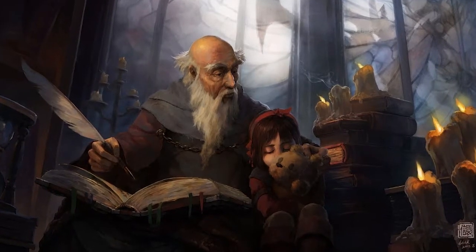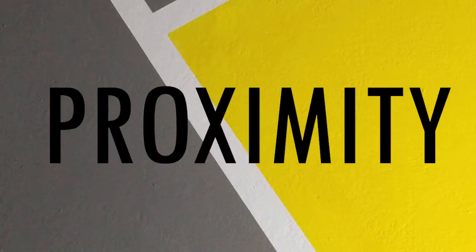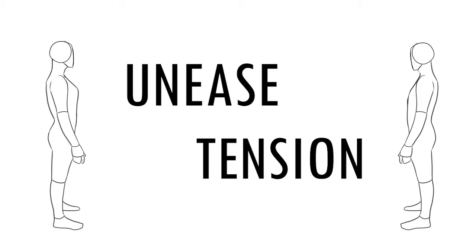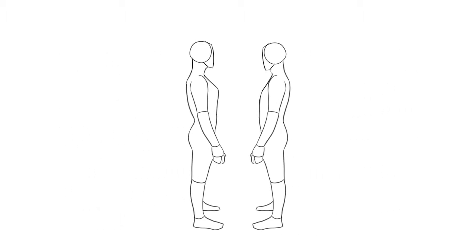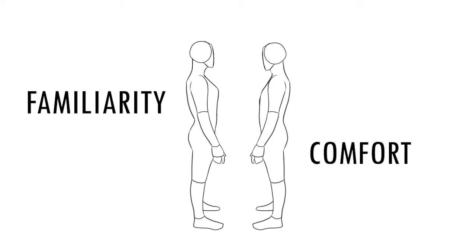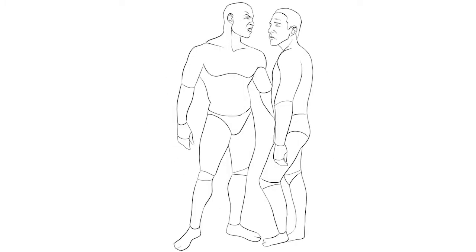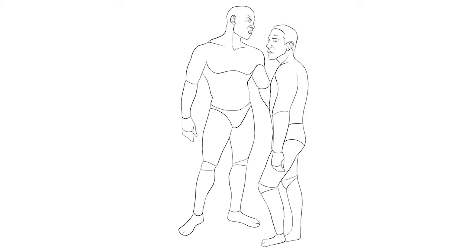Another effective storytelling method is proximity — how close your characters are to each other. If two characters are talking from a distance, that can convey unease or tension. If they're within touching distance, it shows familiarity or comfort. And if they're really close, that can show intimacy. But we can play with this: two characters being really close can also show intimidation instead of intimacy, punctuated further by adopting a higher and lower stance to show who is intimidating whom. Again, no words needed.